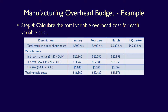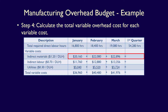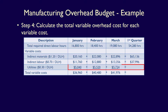We now calculate the total for the first quarter by adding each of the rows for January, February and March. For indirect materials: $20,160 + $22,080 + $22,896 = $65,136. For indirect labour: $11,760 + $12,880 + $13,356 = $37,996. For utilities: $5,040 + $5,520 + $5,724 = $16,284. And for total variable costs: $36,960 + $40,480 + $41,976 = $119,416.